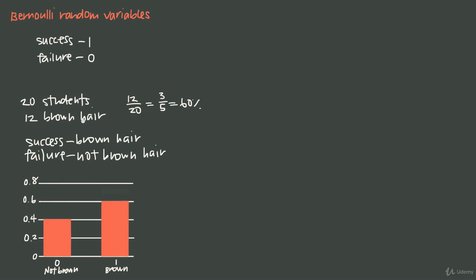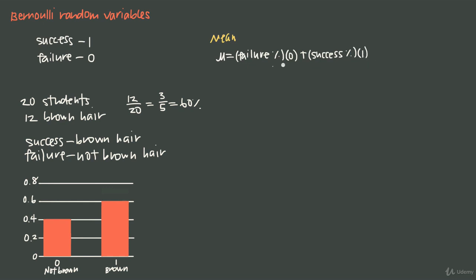To find the mean of this Bernoulli random variable, we use the same formula every time. The mean mu equals the failure percentage multiplied by the weight of failure, which is 0, plus the success percentage multiplied by the weight of success, which is 1. Of course, multiplying by 0 eliminates the failure term completely, and multiplying by 1 has no effect. So the mean mu comes out to just the success percentage.